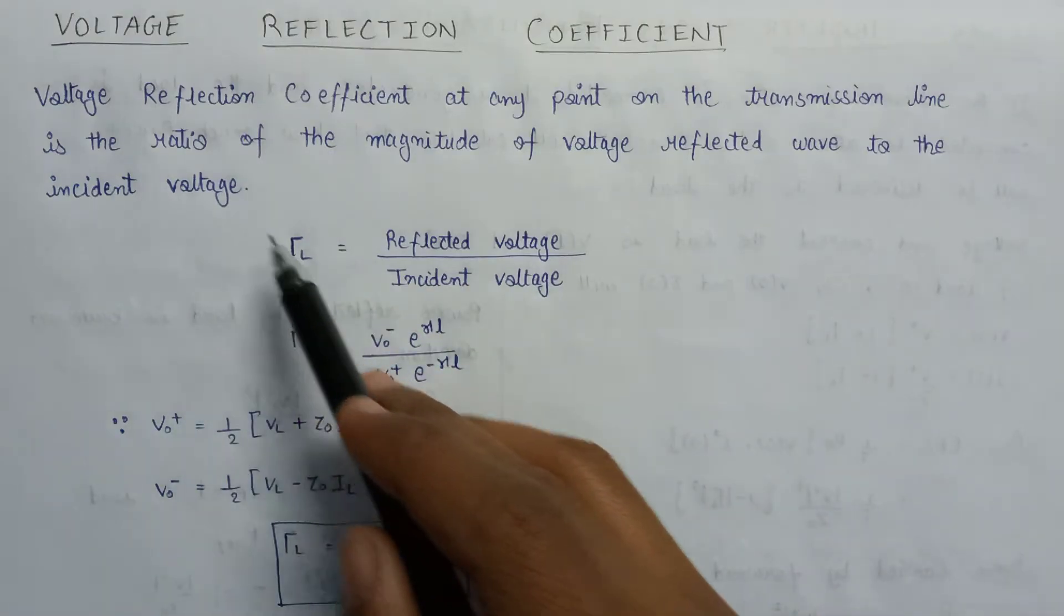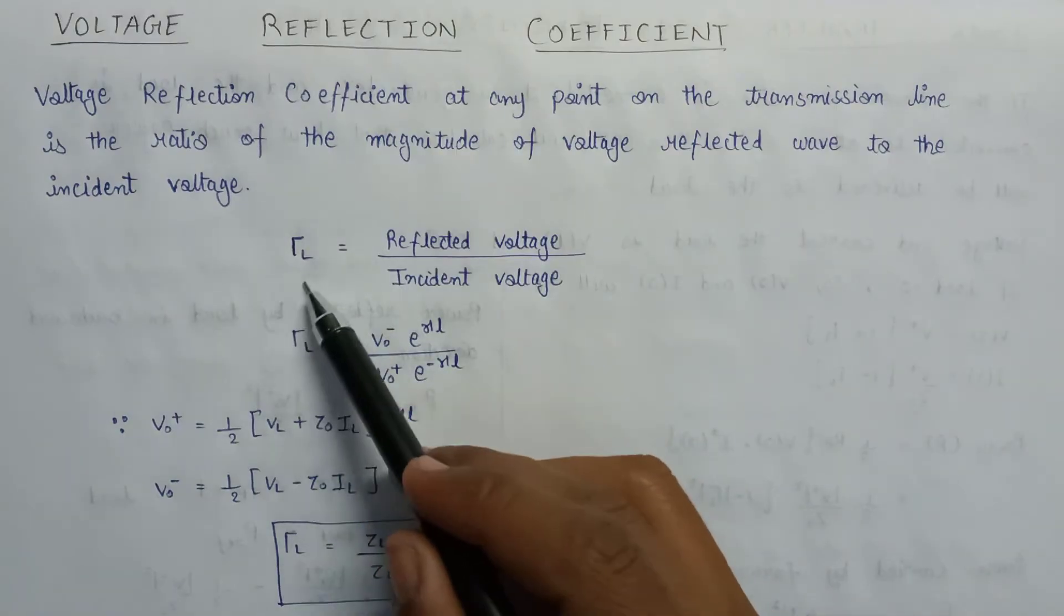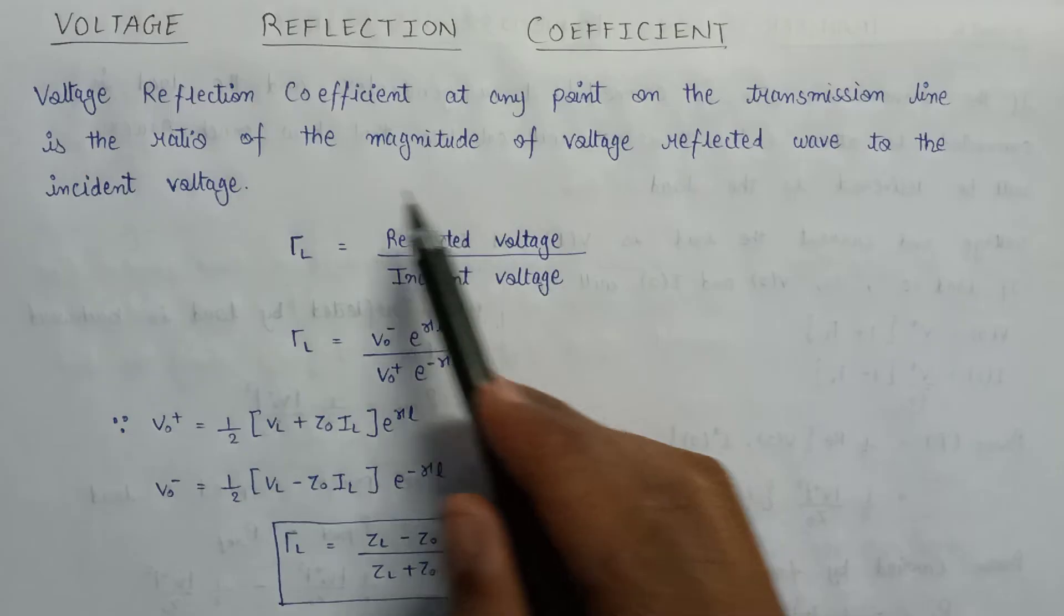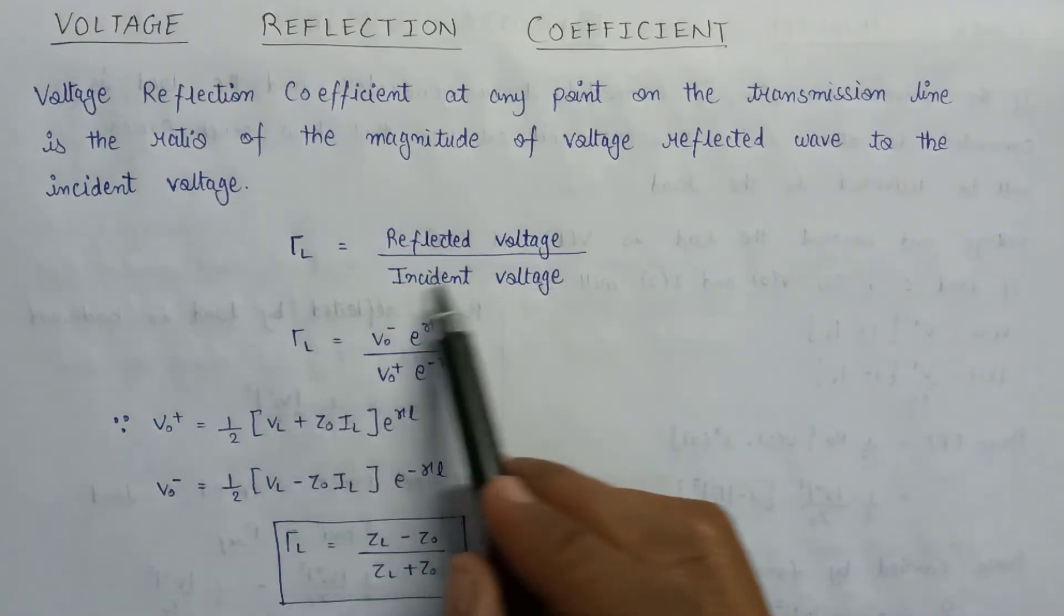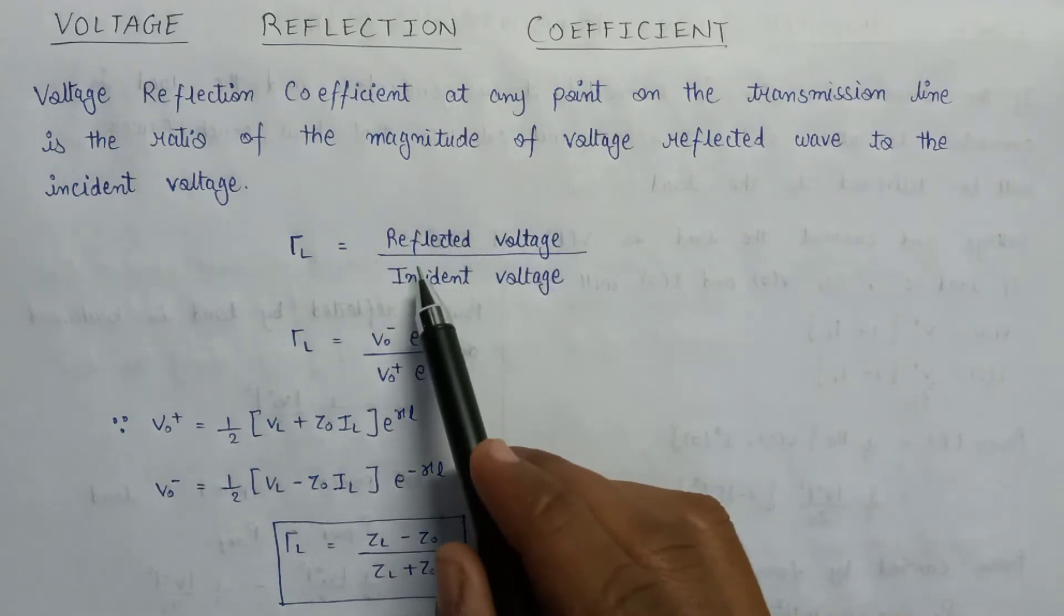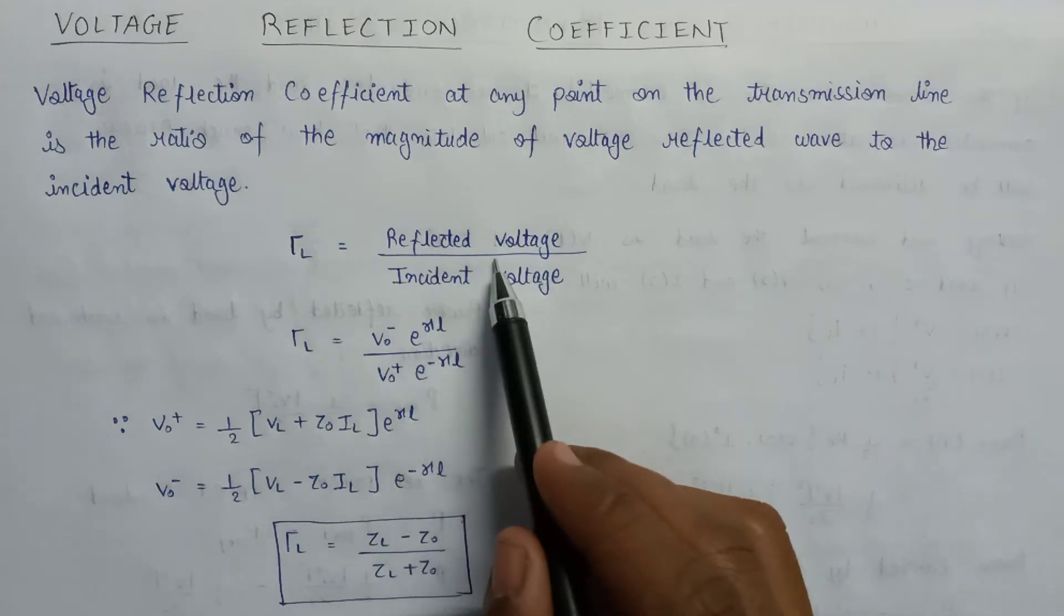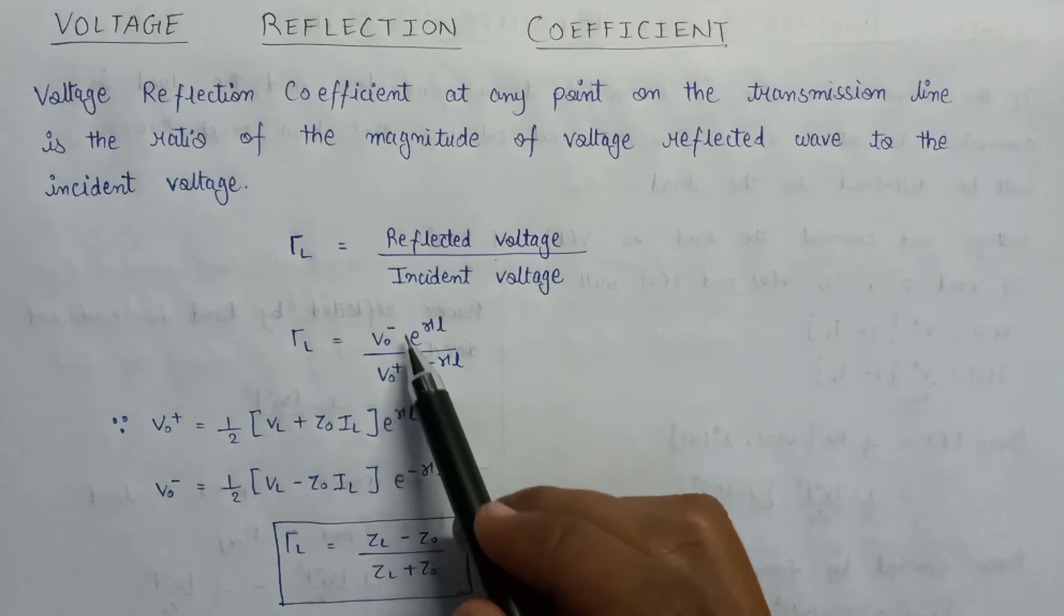Voltage reflection coefficient is denoted by this symbol. As we discussed, it is the ratio of reflected wave to the incident voltage. Here is the formula for voltage reflection coefficient as a ratio of reflected voltage to the incident voltage.